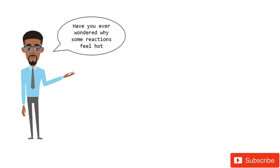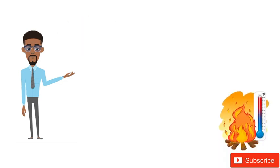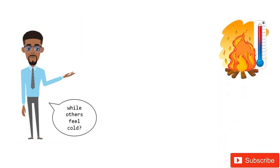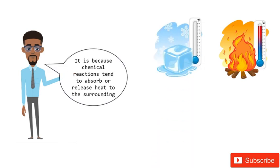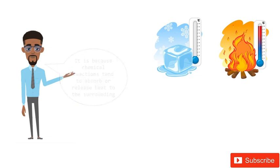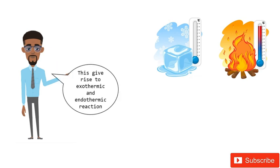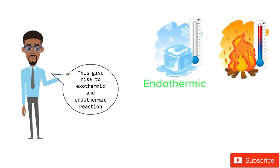Have you ever wondered why some reactions feel hot while others feel cold? It is because chemical reactions tend to absorb or release heat to the surrounding, meaning a chemical system either gains heat energy or loses heat energy. This gives rise to Exothermic and Endothermic Reactions.